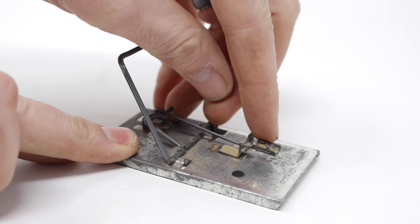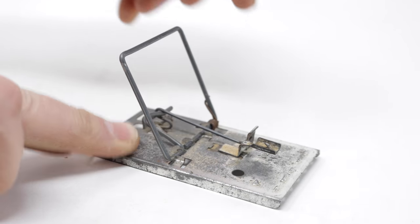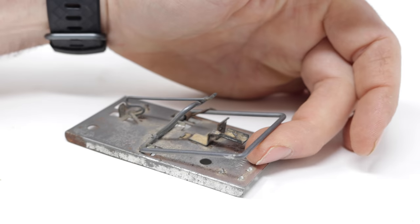If you barely set it right there, that is a hair trigger. Even the smallest mouse will come along, barely touch that, and get caught.